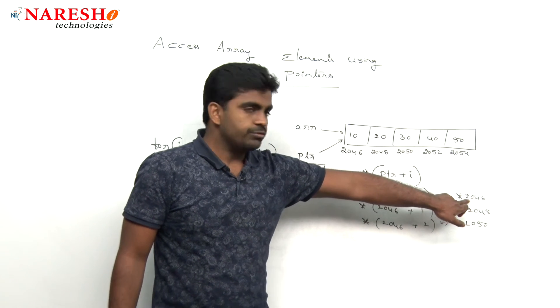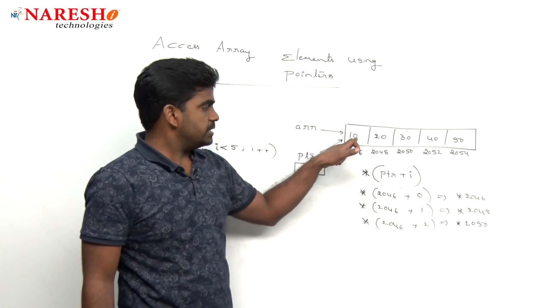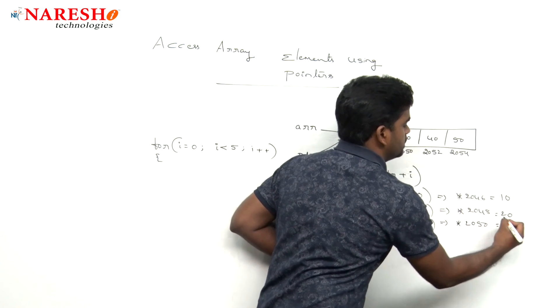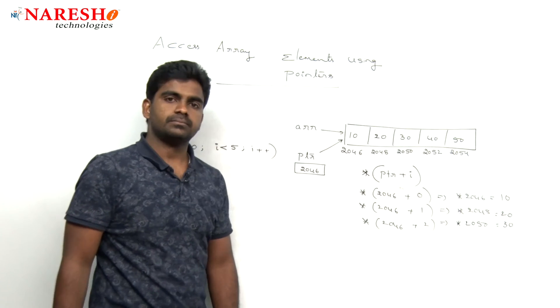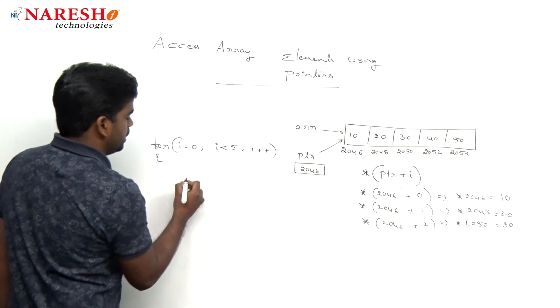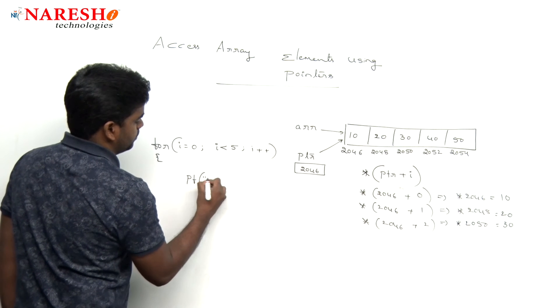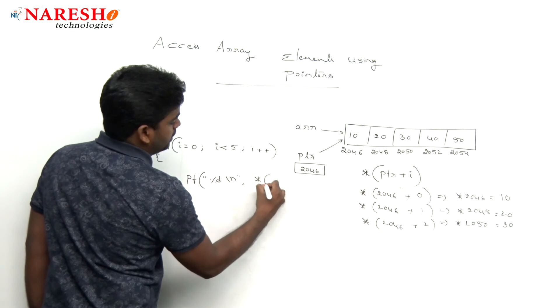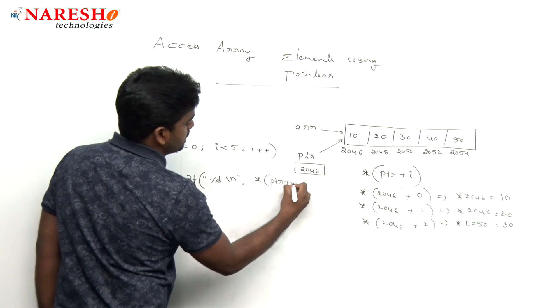Pointer to 2046 means what? The value which is inside the location, it will give 10. Next one is 20, next one is 30 like this. So whenever we are printing %d, here it is *(PTR plus i).